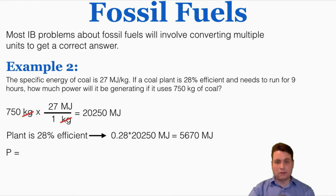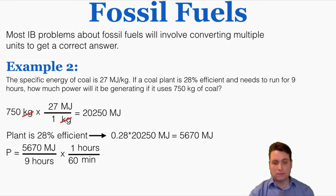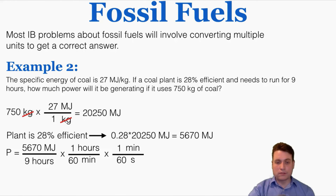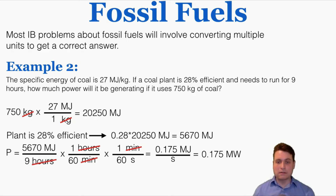Power equals total energy over total time: 5,670 megajoules divided by 9 hours. Since power is measured in seconds, I convert hours to seconds using the factor label method — multiplying by 1 hour per 60 minutes, then 1 minute per 60 seconds, canceling units. This gives 0.175 megajoules per second, or 0.175 megawatts — that's the power of this station using 750 kilograms of coal over a 9-hour day at 28% efficiency.